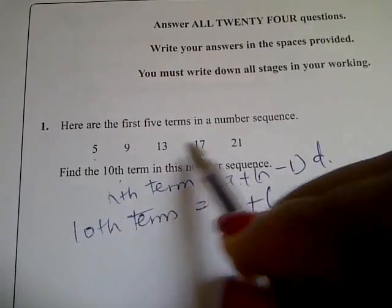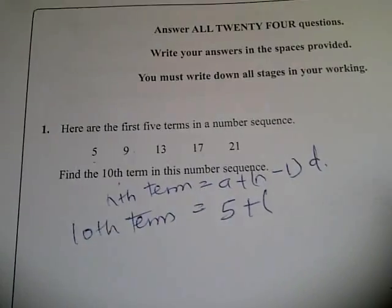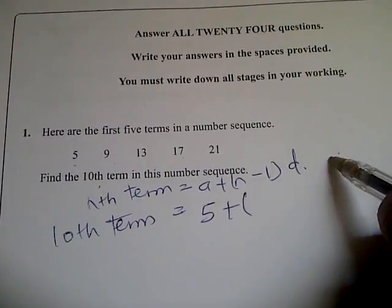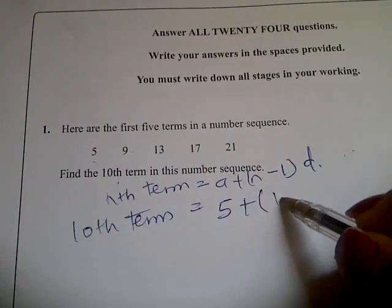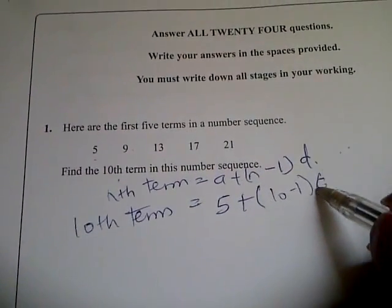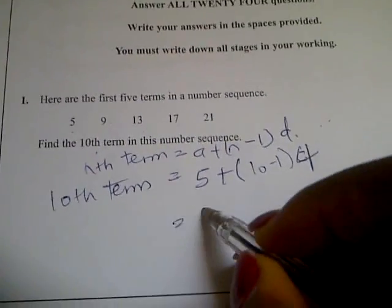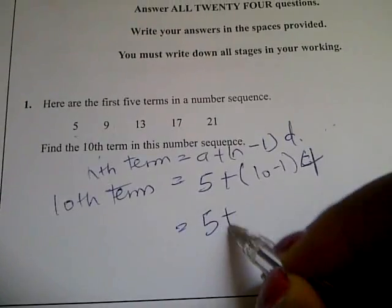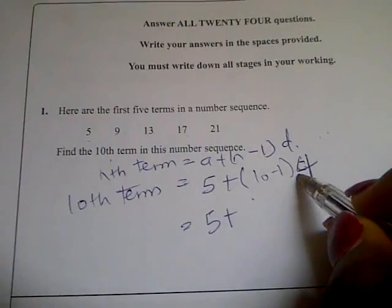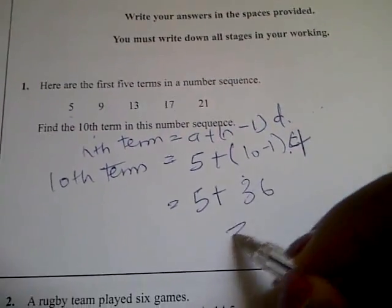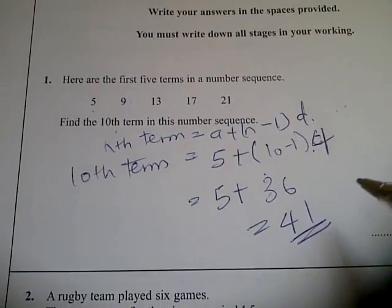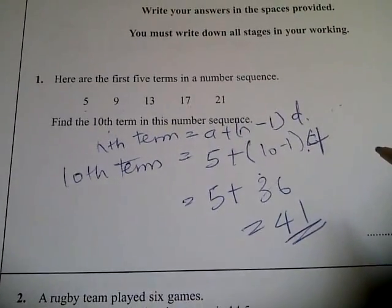d is 4, and (n minus 1) is (10 minus 1), which is 9. So we get 5 plus 9 times 4, which is 5 plus 36, which equals 41. That's it for question 1.